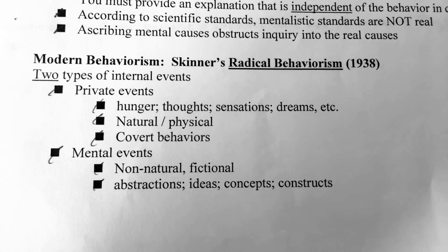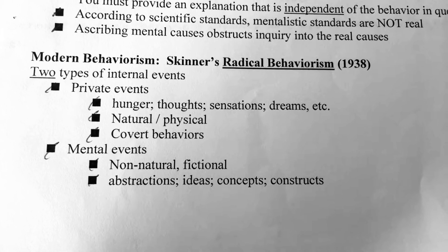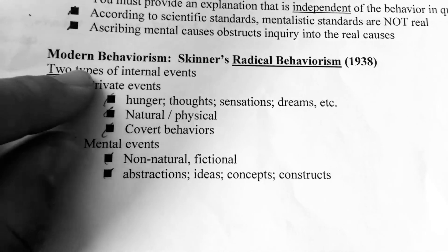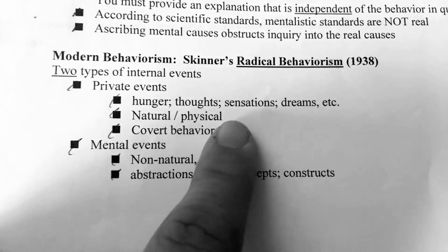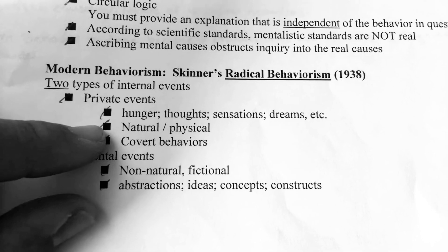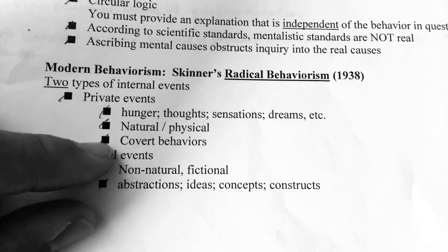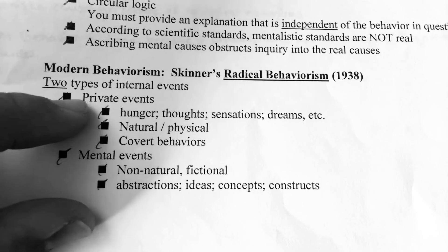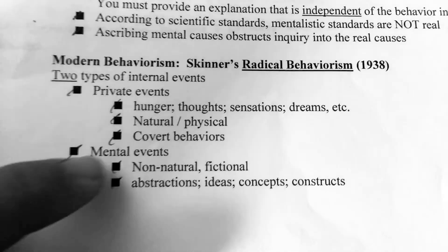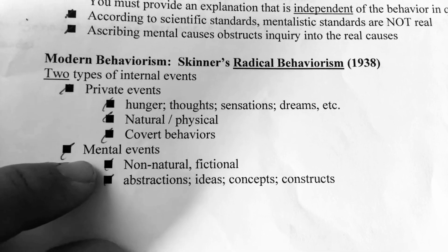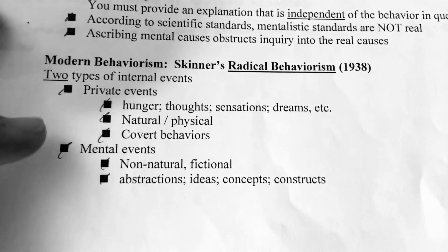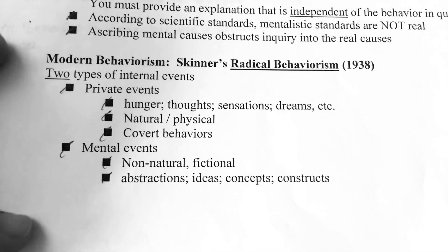For Skinner, there are two aspects. There are private events — which would be hunger, thoughts, sensations, and dreams — the natural, physical, and covert behaviors that fall into private events. Then there are mental events, which are non-natural and fictional: abstract ideas, concepts, and constructs.